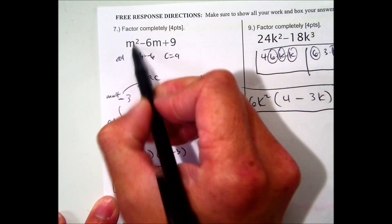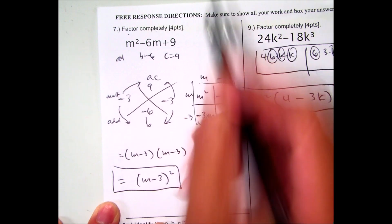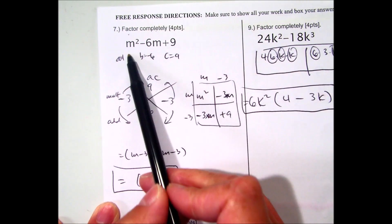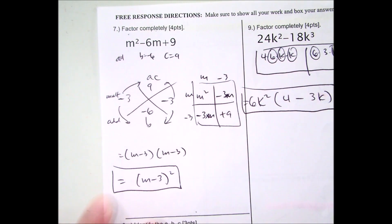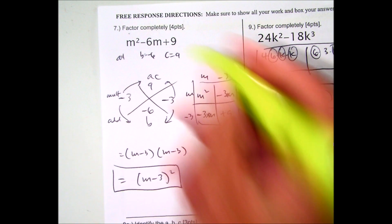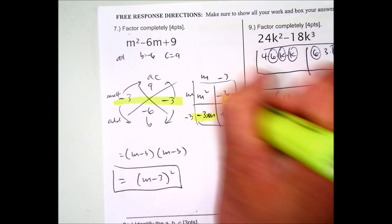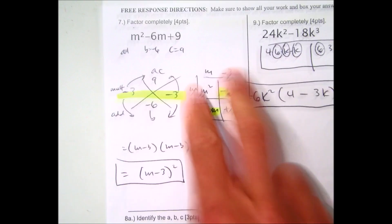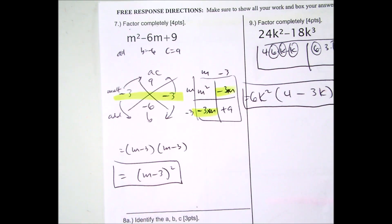Question number 7: factor completely m² − 6m + 9. If you factor that, you'll get (m − 3) and (m − 3), and you have it twice. You just write m minus 3 squared. It's a perfect trinomial square.